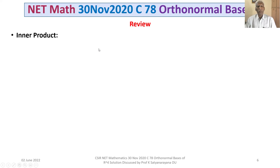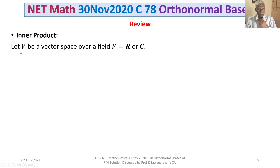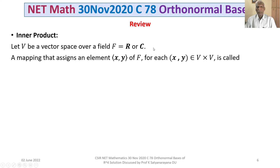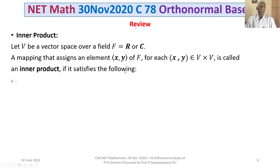Now let us review the definition of an inner product, inner product space, and the norm and their properties. Let V be a vector space over a field F, which is either the field of real numbers or complex numbers. A mapping that assigns an element bracket x comma y of the field F, for each ordered pair (x,y) belonging to V cross V, is called an inner product if it satisfies the following conditions, true for all x, y, z in V and scalar alpha in F.